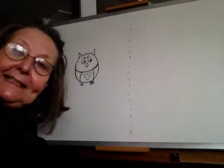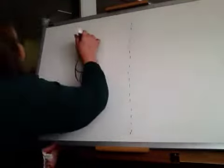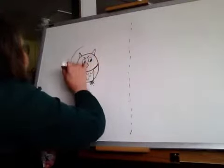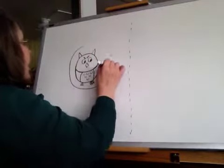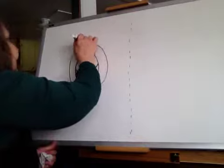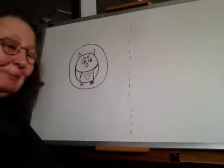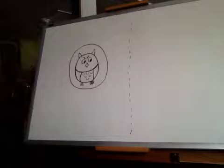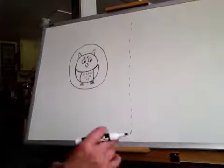And then since he's sitting in a hole in the tree, I'm going to put a hole all the way around him. There. He's sitting in the hole in his tree. Now let's go over here and we will draw the grasshopper.